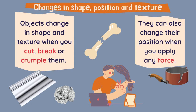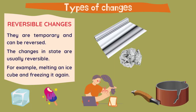Now let's look at changes in shape, position, and texture. Objects can change in shape and texture when you cut, break, or crumple them. They can also change their position when you apply any force. For example, here she is cutting her hair, this bone is broken, and you can crumple this aluminum foil into a ball.